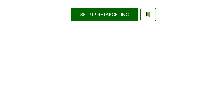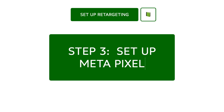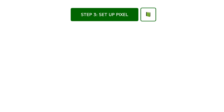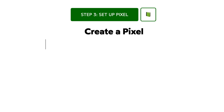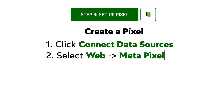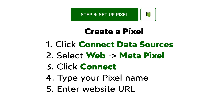Now it's time to set up a way to track your store visitor activity. We will need to create a pixel if you don't have one yet, install it on your website, and prioritize the events on it. To create the pixel, go to Events Manager, click Connect Data Sources and select Web, then select Facebook Pixel and click Connect. Add your pixel name and enter your website URL to check for easy setup options, then click Continue.